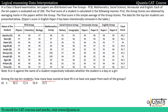Among the top 10 students, how many boys scored at least 95 in at least one paper from each group? We consider only boys: Ram, Dipan, Sagnik, Sanjeev, Joseph, Pritam and Agni. We check every group for each boy — they must score at least 95 in at least one paper per group. For Ram: most scores are above 95, but in Vernacular he scores less than 95 in both papers — so Ram is excluded.